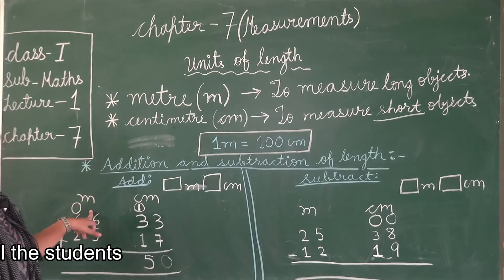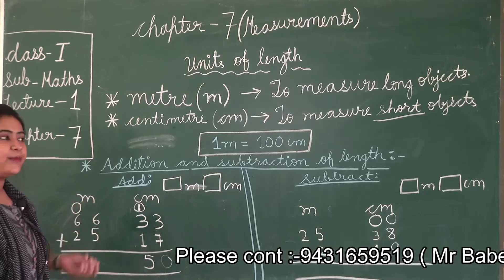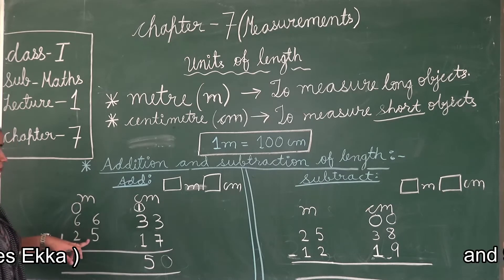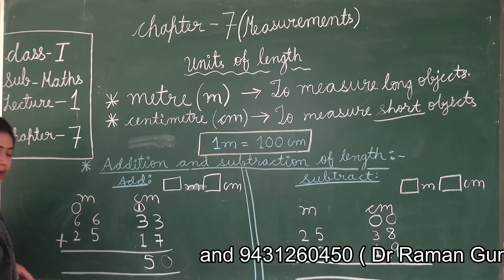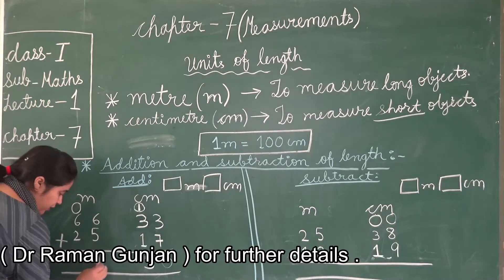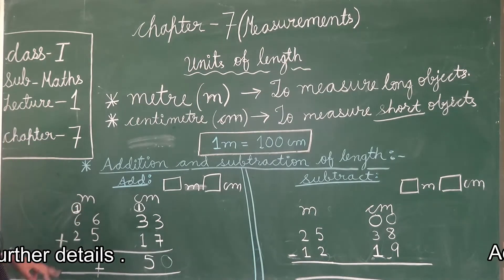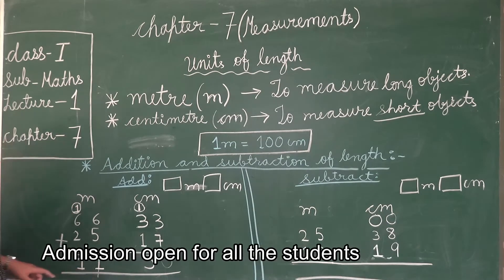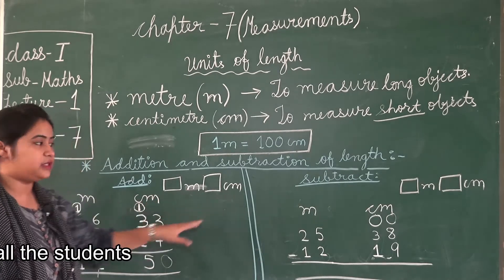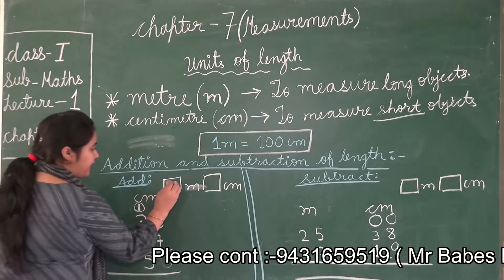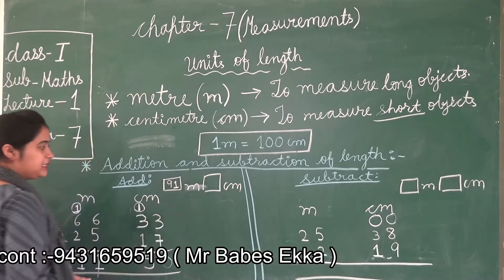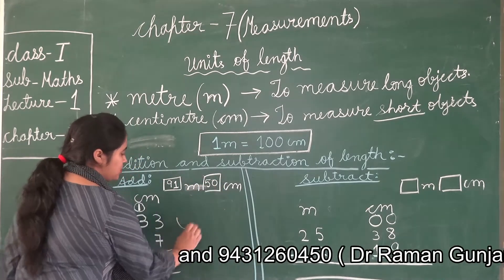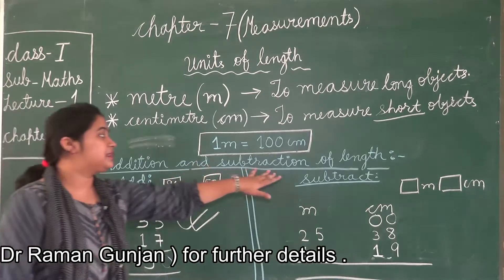Now we move to the meter column. 6 plus 5 equals 11, so we write 1 and carry 1 forward. Then 6 plus 1 plus 2 equals 9. So in the meter column the total is 91. We write 91 meters and 50 centimeters. This is the way we can add in the length chapter. The process of addition remains the same - just keep in mind that one meter equals 100 centimeters.